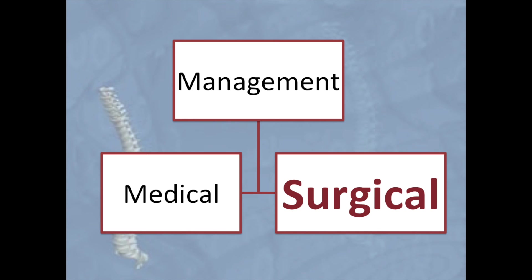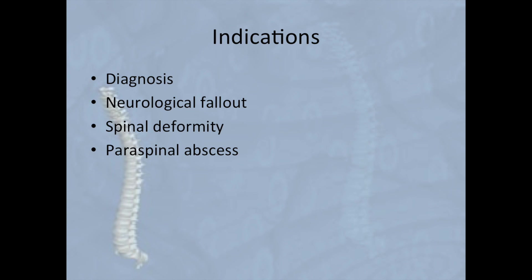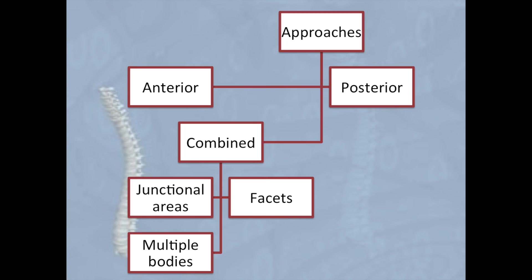Indications for surgery include: diagnosis as discussed earlier; persistent neurological fallout despite treatment; spinal deformity involving two or more bodies, which can give a poor cosmetic outcome and increased risk of paraparesis; and a large paraspinal abscess, which may impair drug penetrance and can be drained. Surgery is performed by an orthopaedic surgeon. Approaches are either anterior, posterior, or both — a combined approach is often used at junctional areas and where facets or multiple bodies are involved. Debridement, decompression, and fusion are the techniques most commonly employed.